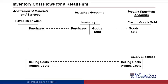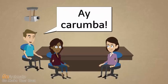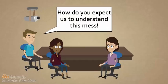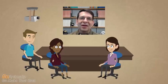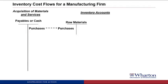Now we're going to talk about how this looks for a manufacturing firm. A manufacturing firm is a company that actually makes the inventory instead of buys it — we just have to make a couple small changes. The first step looks just like what we saw for the retail firm, where we're making some initial purchases of inventory with payables or cash. But instead of purchasing finished goods that could be sold immediately, for a manufacturing firm the first step is to purchase raw materials. So we create an inventory account titled Raw Materials.